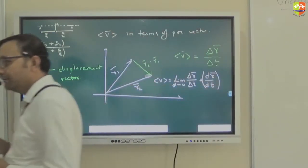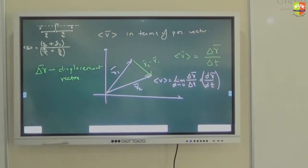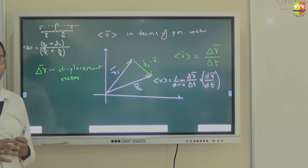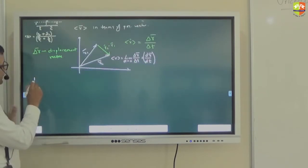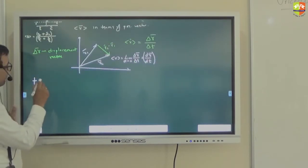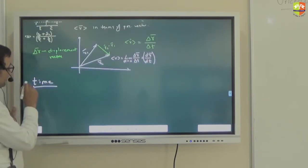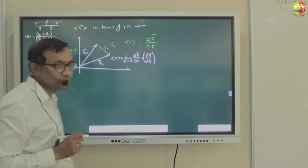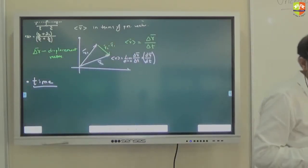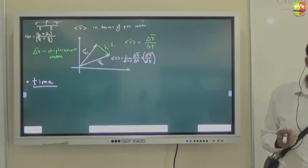Rate of change of position vector is the velocity vector. To differentiate the position vector, you will get the velocity vector. Now let's talk about time. Time is another motion variable — a very important motion variable.